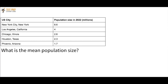The next question asks for the range. The range is the biggest number minus the smallest number. The biggest number in the data set is 8.6, and the smallest is 1.7. So 8.6 minus 1.7 gives you 6.9. Mean, median, mode, and range is fair game for social studies, science, and math — there's a good chance you'll come up against one of these questions at some point on your test.